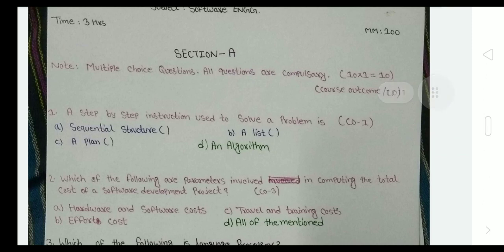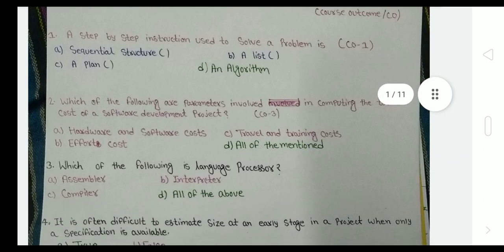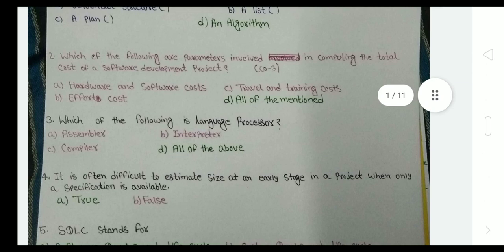The first one is Section A, MCQ type questions. A step-by-step instruction used to solve a problem is an algorithm. D is the right answer. The second one: which of the following are parameters involved in computing the total cost of a software development project? D, all the given points are right, so the answer is all of the mentioned.